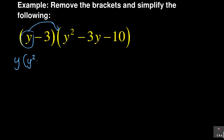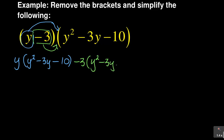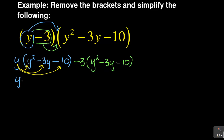So in this case I will have y multiplying y squared, minus 3y, minus 10 — that is: y times (y² − 3y − 10). And then I also have minus 3 multiplying everything in the bracket, which will be minus 3 times (y² − 3y − 10). You can see the two sections: y multiplying the bracket, and minus 3 multiplying the bracket.